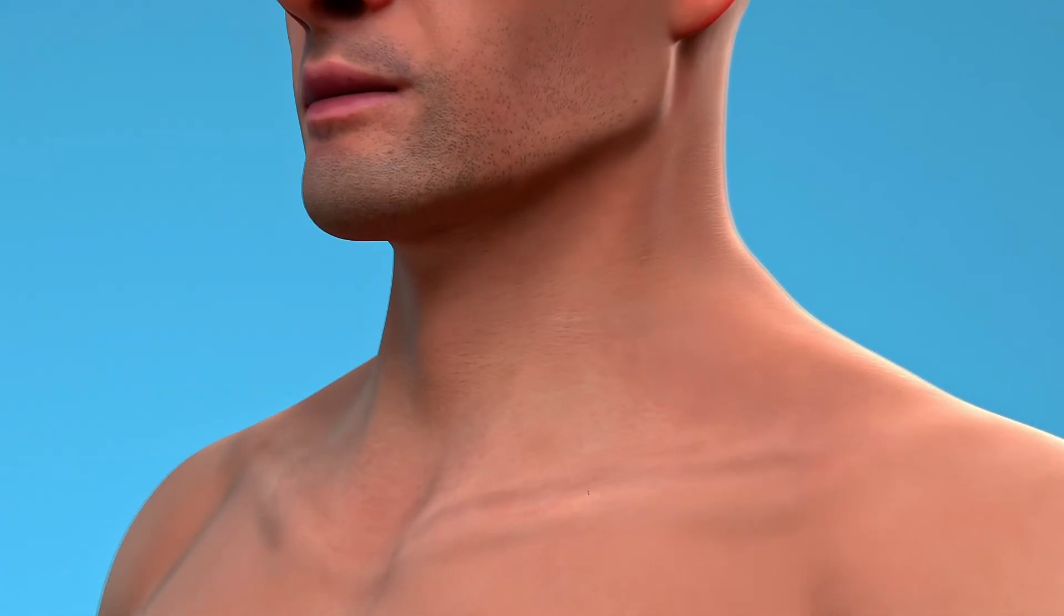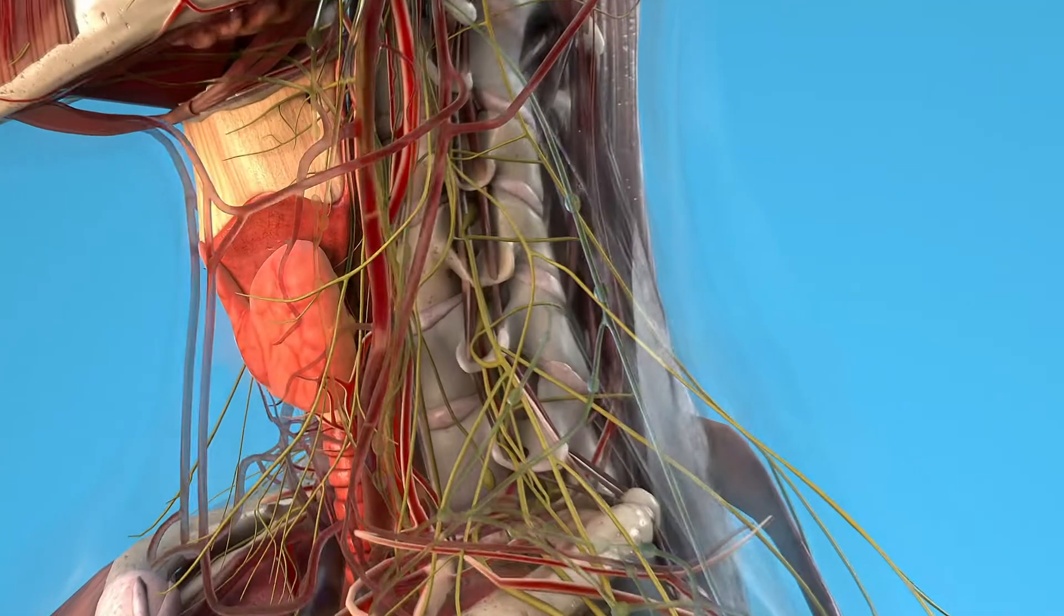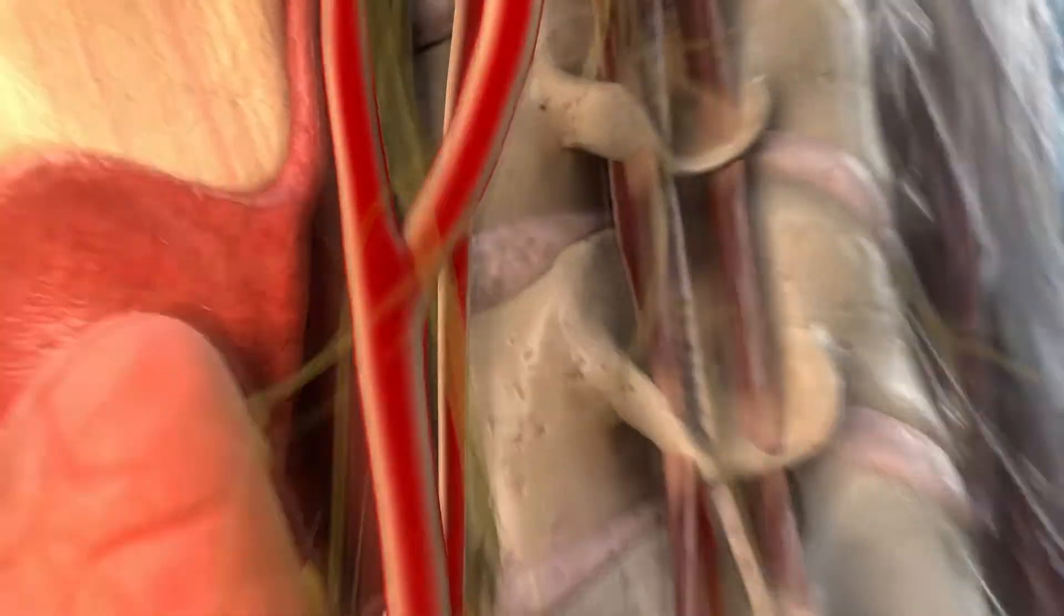Atherosclerosis is a condition characterized by the buildup of plaques, which are made up of fat, cholesterol, and other substances in the walls of arteries.